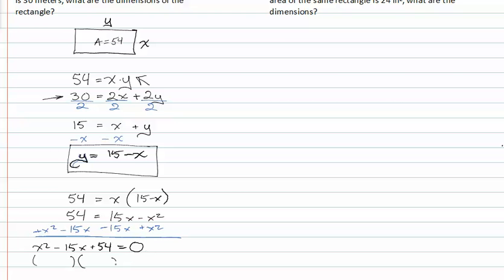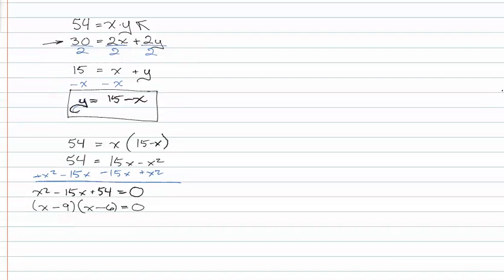And I get x squared minus fifteen x plus fifty four is equal to zero. Factoring, I get x minus nine and x minus six. Setting my factors equal to zero, I get x is equal to nine and x is equal to six.